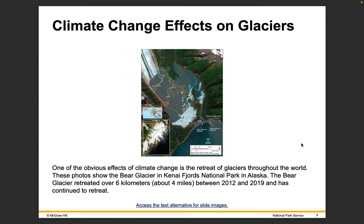One of the obvious effects of climate change is the retreat of glaciers throughout the world. These photos show the Bear Glacier in Kenai Fjords National Park in Alaska. The Bear Glacier has retreated more than 6 kilometers, or about 4 miles, between 2012 and 2019 and has continued to retreat since then. You can see the glacier levels marked at 1888, 1950, 2000, 2005, 2015, 2018, and 2019. That's a dramatic change.